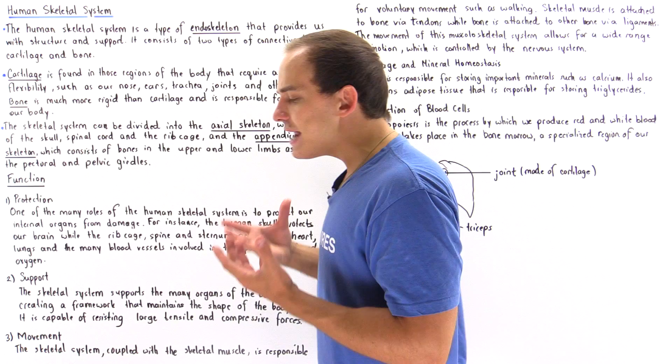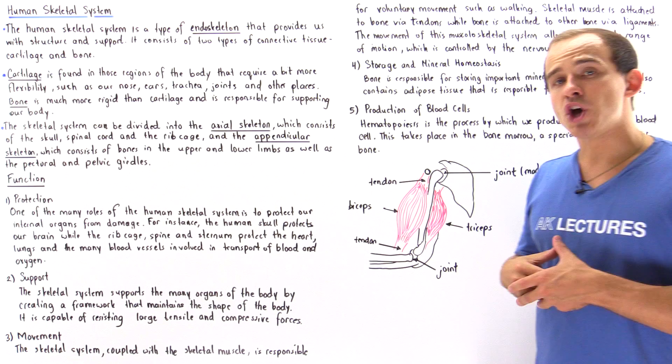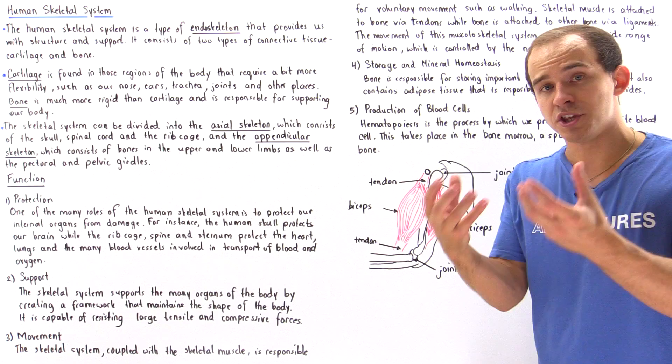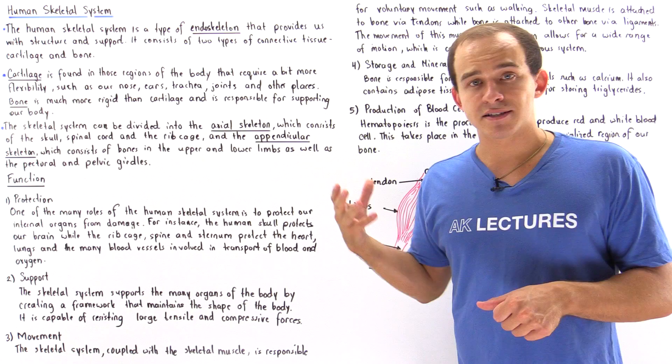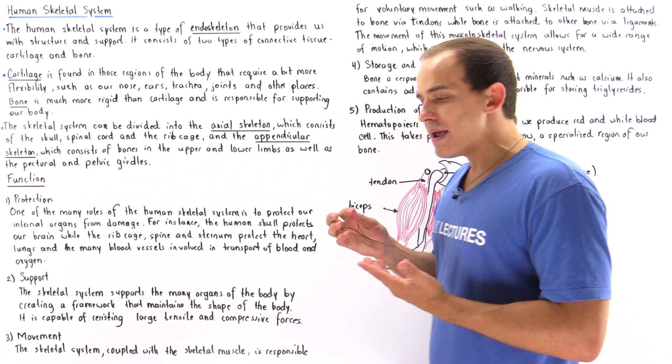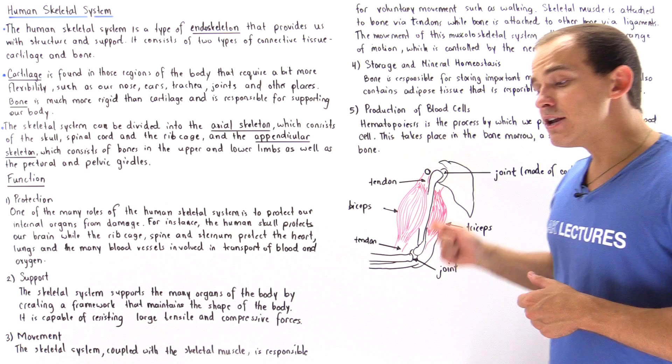The final function of the skeletal system is producing our blood cells, and this process is known as hematopoiesis. This takes place in a specialized type of structure within the bone known as the bone marrow, and we'll discuss the structure of the bone in the next lecture. There are two important types of blood cells: we have red blood cells, which basically transport our oxygen using hemoglobin along the blood vessels, and white blood cells, which are important cells involved in the immunity of our body. We'll talk about white blood cells in more detail when we discuss the immune system of the human body.